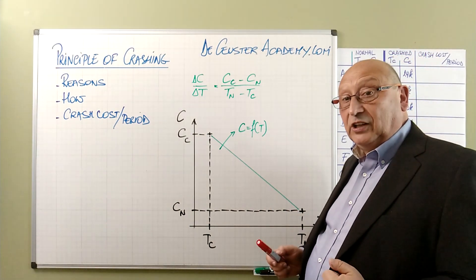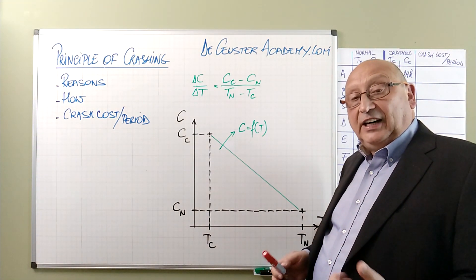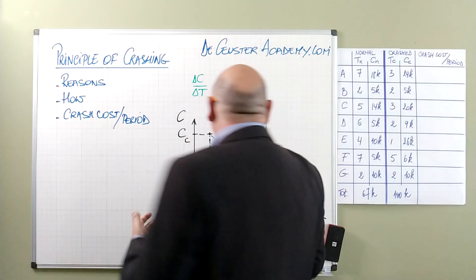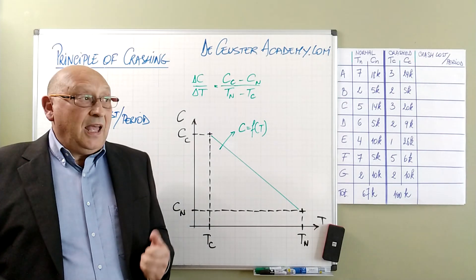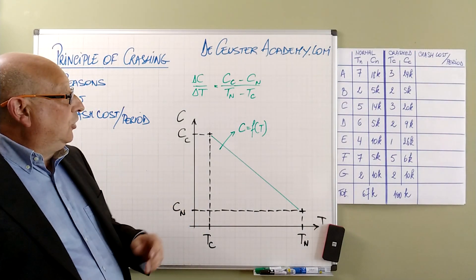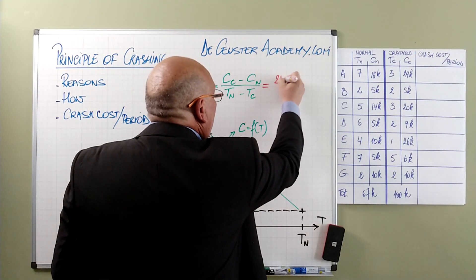This is in fact the slope of this slide, and using this formula we can calculate the crash cost per time unit for all the activities. Let's have a look at some of those activities. First of all, we have activity A.